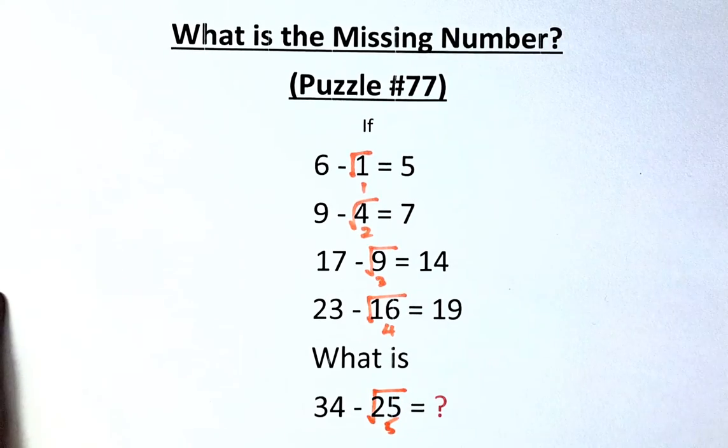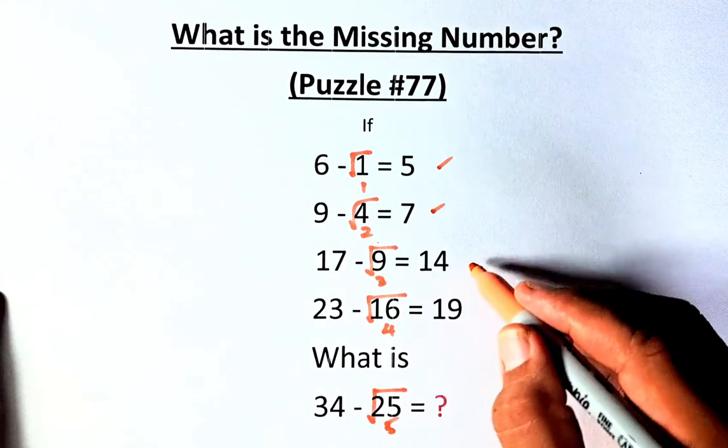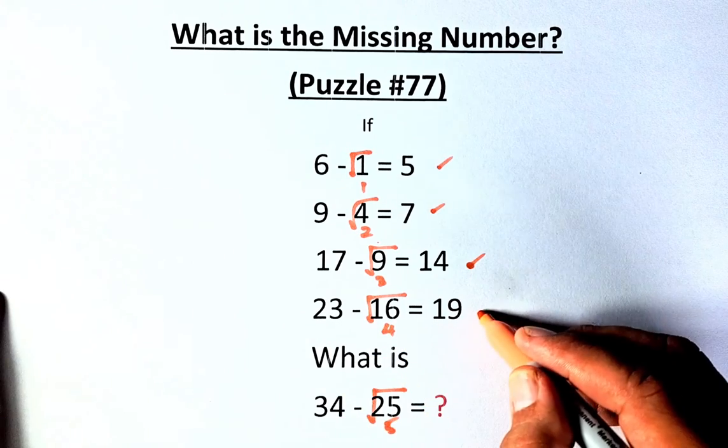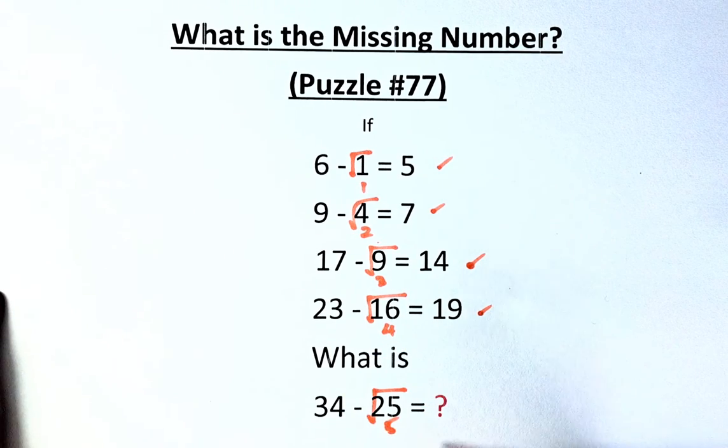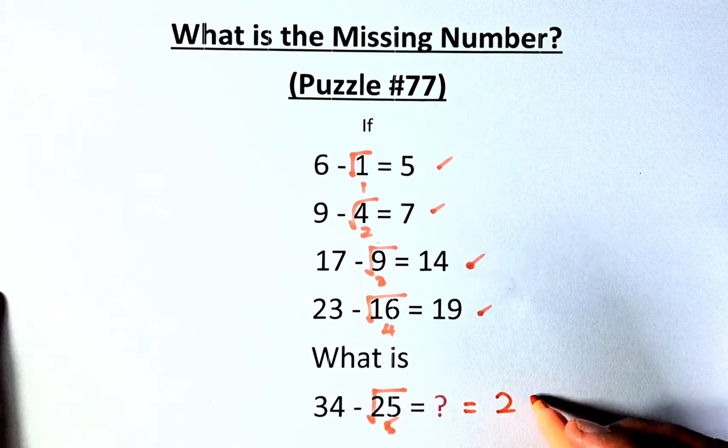So now you can see the pattern. 6 minus 1 is 5, 9 minus 2 is 7, 17 minus 3 is 14, 23 minus 4 is 19, so 34 minus 5, the question mark is equal to 29.